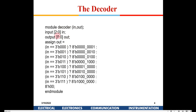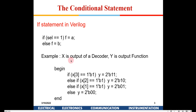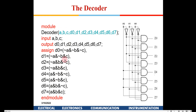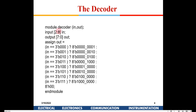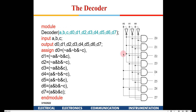Earlier we wrote the decoder in gate-level modeling. Now in data flow modeling, we define the input as a 3-bit data 'in' and the output as an 8-bit data 'out'. We write assign statements: assign out — if 'in' is equal to 3'b000, then the output will be 8'b00000001, meaning the topmost output line will be activated.